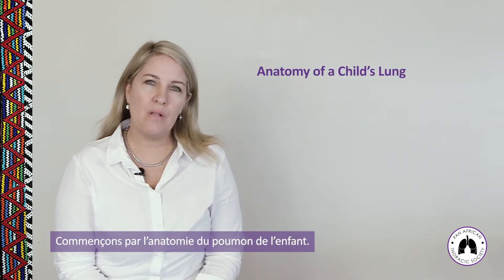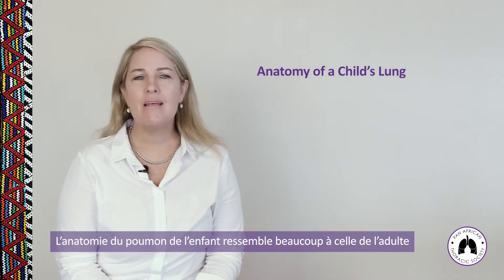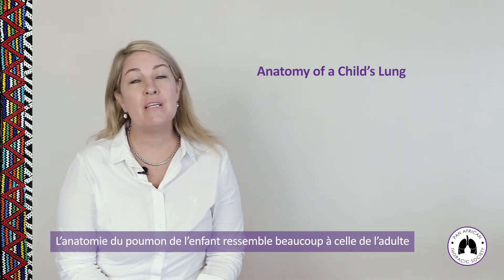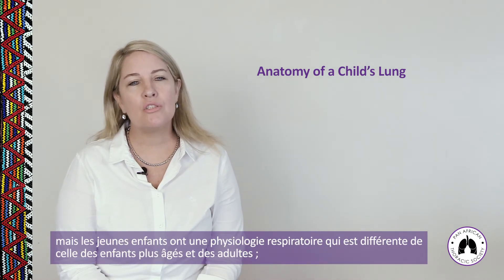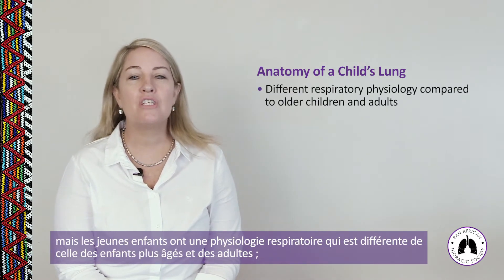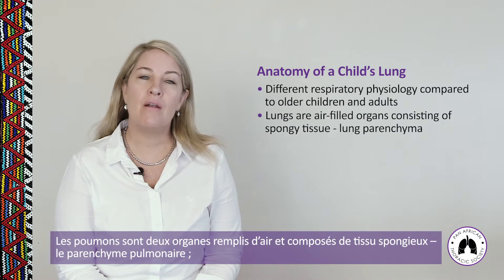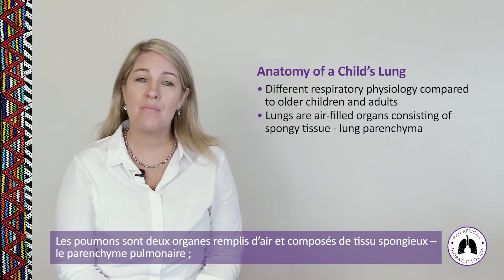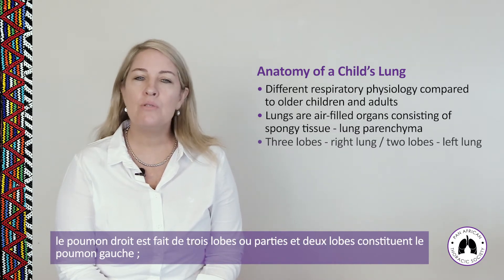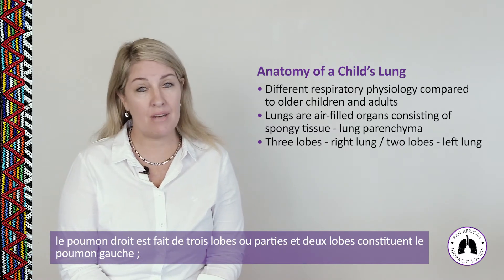Let's look first at the anatomy of the child's lung. The anatomy of a child's lung is very similar to that of an adult, but young children have different respiratory physiology compared to older children and adults. The lungs are a pair of air-filled organs consisting of spongy tissue called lung parenchyma. Three lobes make up the right lung, and two lobes make up the left lung.